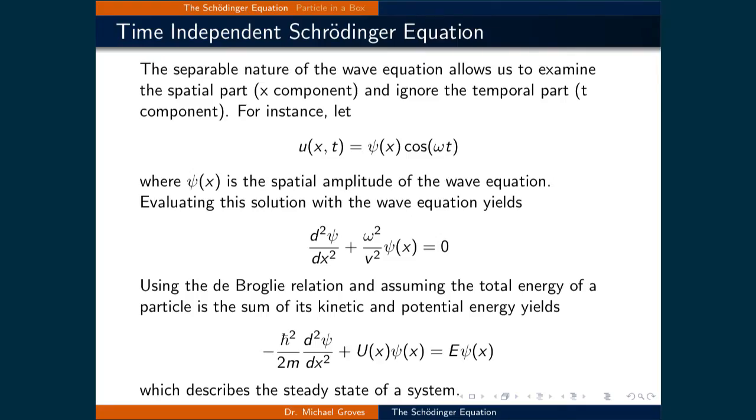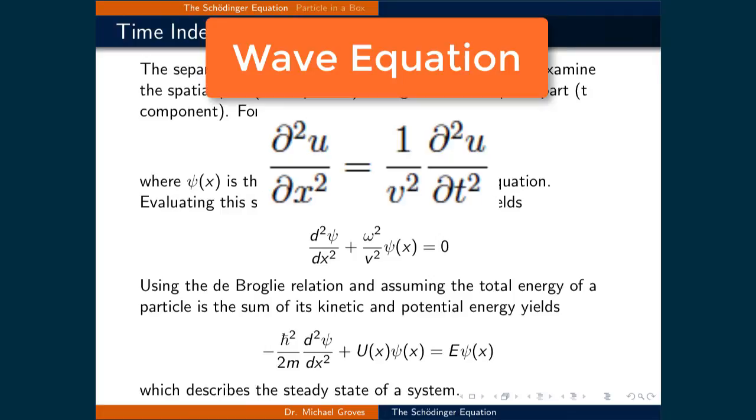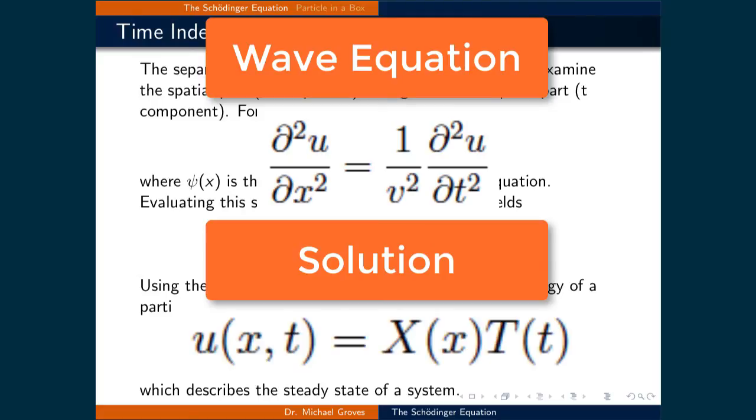In this course, we will focus on the time-independent Schrödinger equation. One way it can be derived is as such. Think back to the activity where we examined solutions to the wave equation. To solve the wave equation, we used a solution where u(x,t) equals capital X(x) times capital T(t), meaning that it was a function totally of position times a function totally of time.